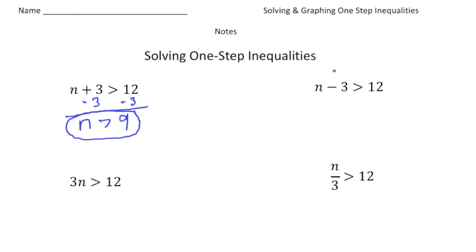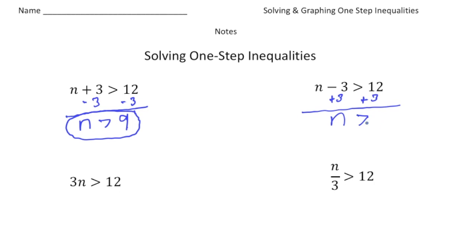Over here we have n minus 3 is greater than 12. The opposite of subtracting 3 is adding 3, so we're going to add 3 to both sides. So n is going to be greater than 15.